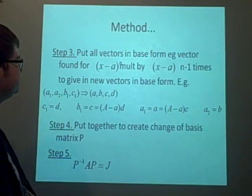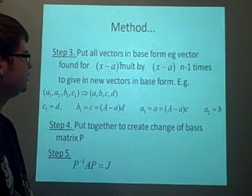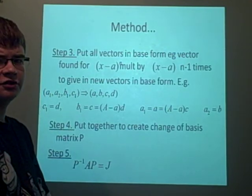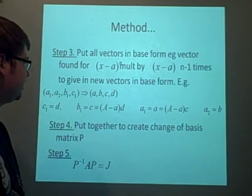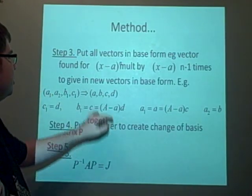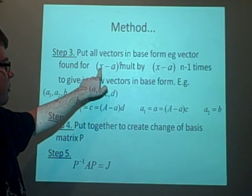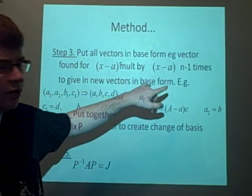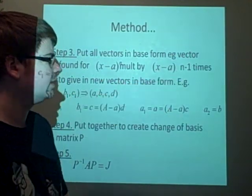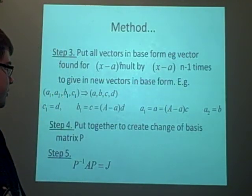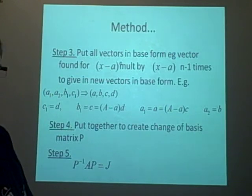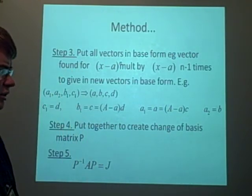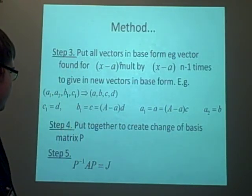The next step, this is the tricky one, is when you want to put the vectors, you have to put all the vectors in the same basis. So all the vectors you found for the kernel of x-a to the n, you have to multiply the last one by x-a n-1 times, and this will give you a new basis. And you have to keep doing that, you have to change the vectors you've found.